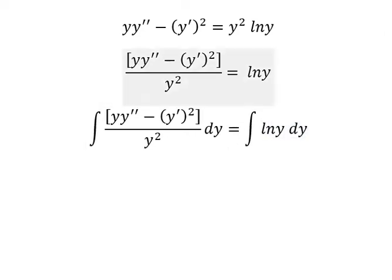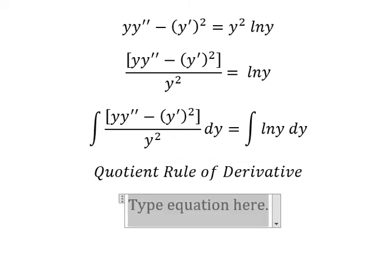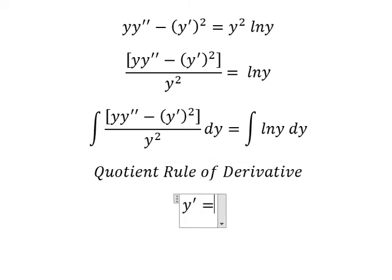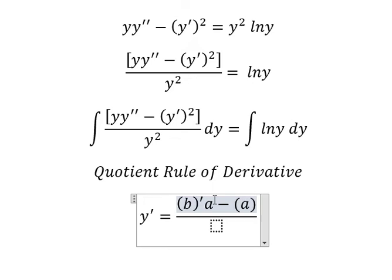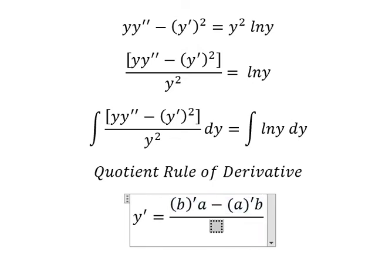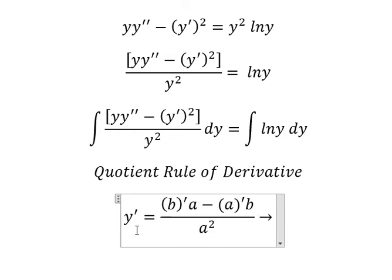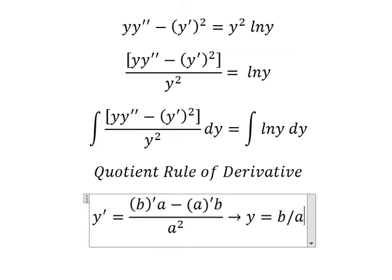Next we can use the quotient rule of derivative. We have first derivative of y. We do first derivative of b multiplied by a minus first derivative of a multiplied by b over a-square. So if we do this integration, you got y equals b over a.